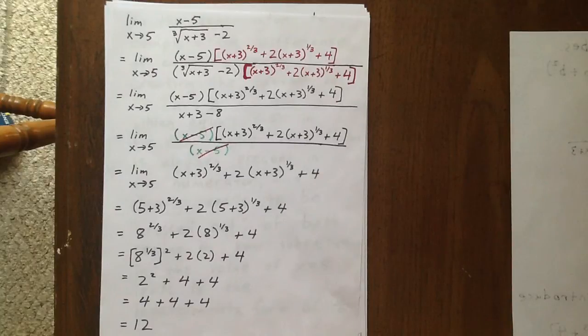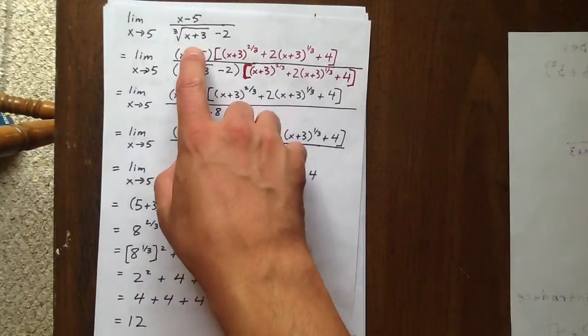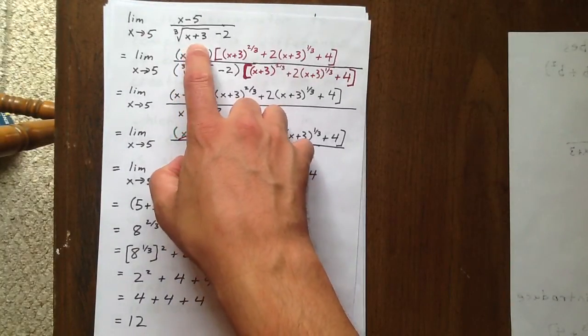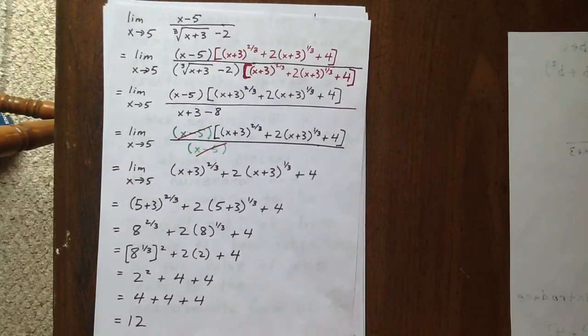So we need to somehow rationalize that denominator. And sometimes what people think that we should do is multiply by the cubed root of x plus 3 plus 2. We're not going to do that though because that works when you're taking a square root not a cubed root.